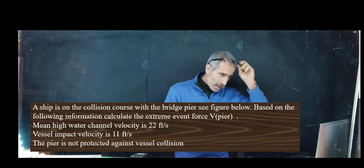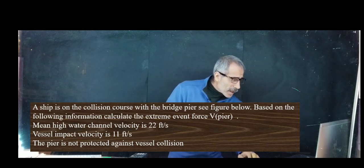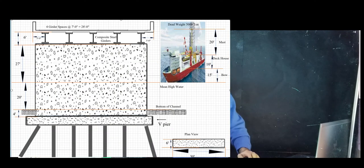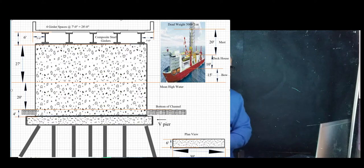Take a look at this problem. Let me put this problem on the board here. Okay, we have this bridge right there and this is a ship on a collision course with the bridge pier. The velocity of the channel is 22 feet per second and the velocity of the ship is about half of that, 11 feet per second.